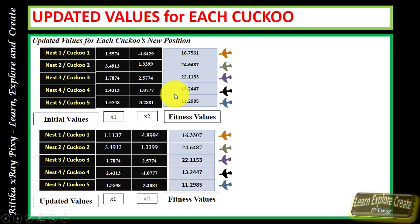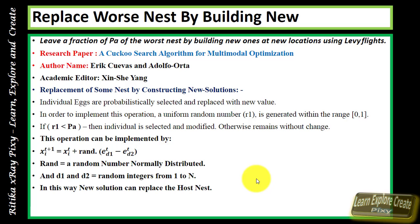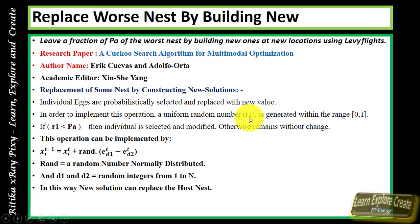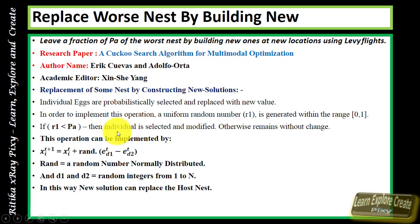After updating positions, we now address the probability of discovery of the cuckoo's egg by the host bird. We use probability = 0.25. From the research paper 'Cuckoo Search Algorithm for Multi-modal Optimization,' this operation replaces the worst nest with a newer one. Here, r1 is a uniform random number in range [0, 1]. If r1 is less than 0.25, the individual is selected and modified — meaning the cuckoo's egg is discovered. If r1 is greater, the egg is not discovered and no change is made.